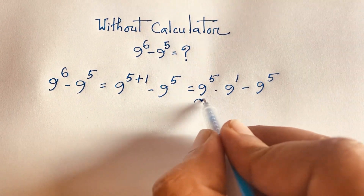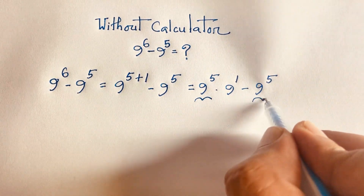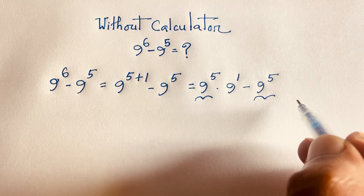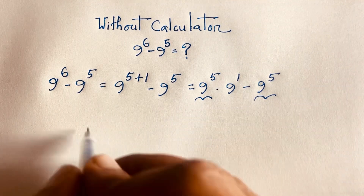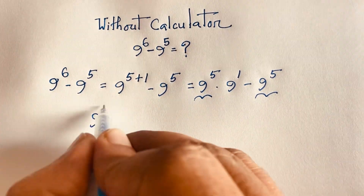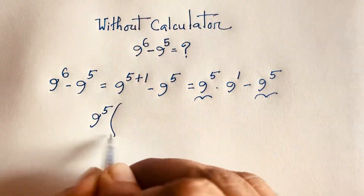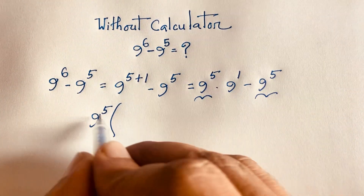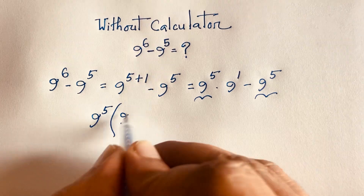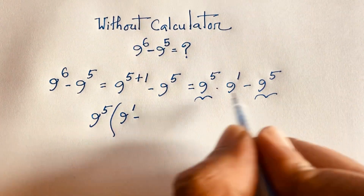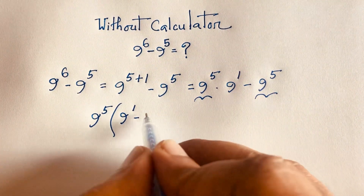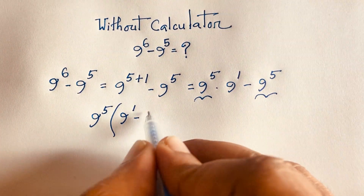Here is 9 to the power 5 and this is 9 to the power 5, so 9 to the power 5 is common. Factoring it out: this divided by this gives 9 to the power 1, minus this divided by this gives 1.